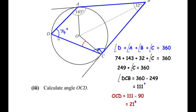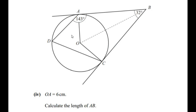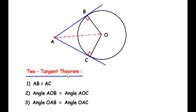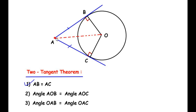Now let us move on to the last sub-question. OA is given as 6 centimeters — that is the length of the radius. We have to calculate the length of AB. Before proceeding, let us understand the two-tangent theorem. A circle with center O has an external point A through which two tangents AB and AC are drawn. According to this theorem, if two tangents are drawn to a circle from a common external point, then the lengths of the tangents are equal — that is, AB equals AC.